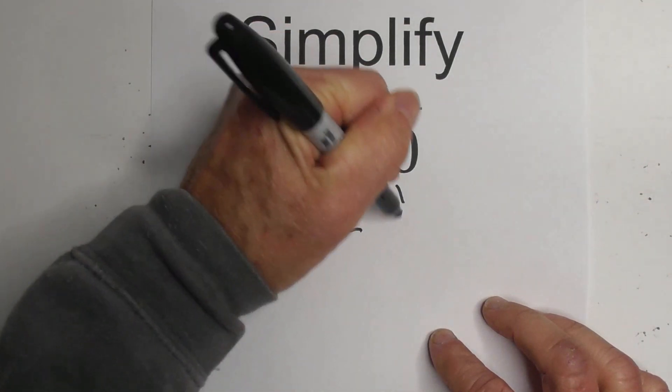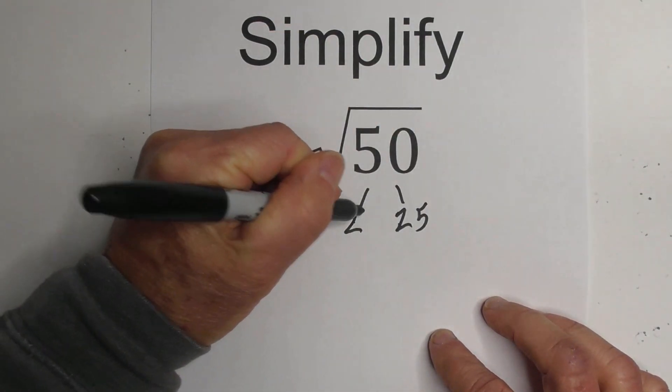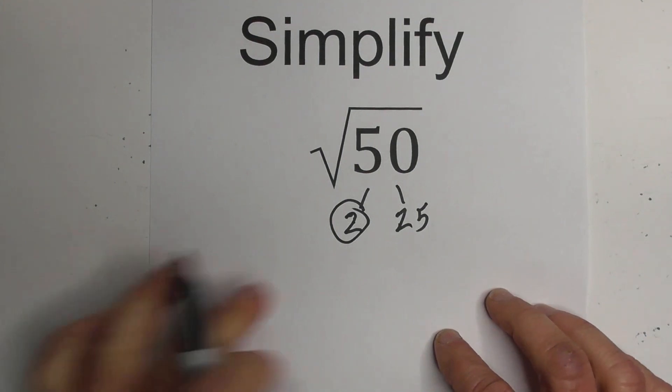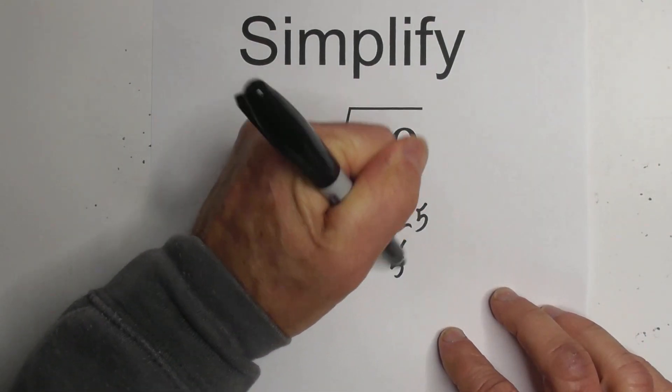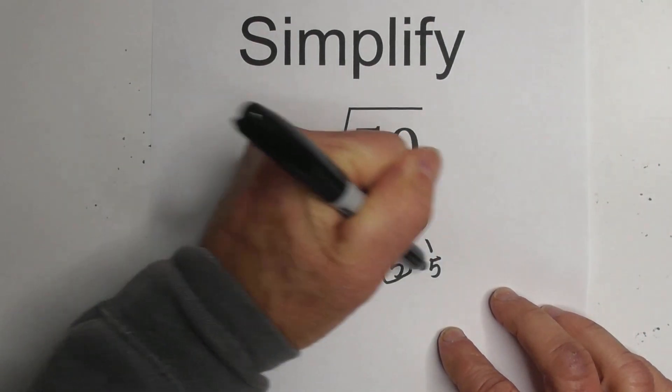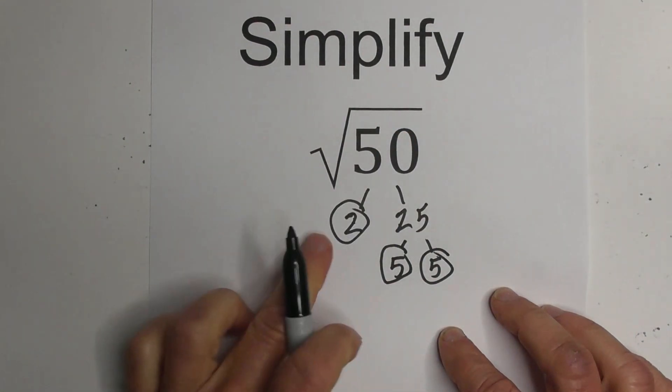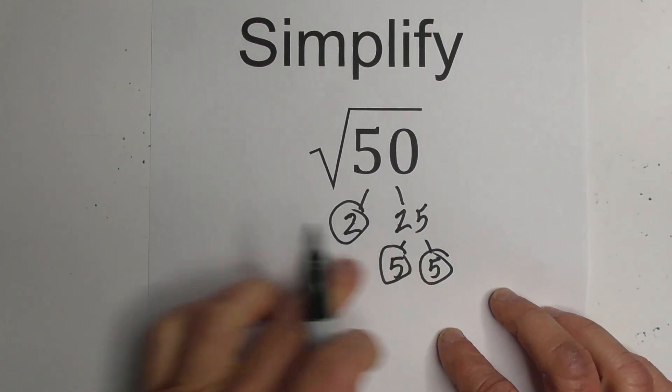I know that 2 times 25, remember 2 is prime, so I'll circle it, equals 50, and then 5 times 5 equals 25, and I'm now down to prime numbers.